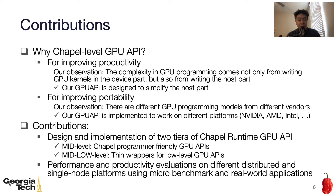We believe those levels of abstraction are important for two reasons. One is for improving productivity. This is based on the fact that the complexity in GPU programming comes not only from writing the GPU kernel in the device part, but also from writing the host part — meaning GPU memory allocation, reallocation, and data transfer code. Our API is designed to simplify that part. Another reason is for improving portability. Since there are different GPU programming models from different vendors, it is important for the user to write the host code in a platform-agnostic way. Our API is implemented to work on different platforms.